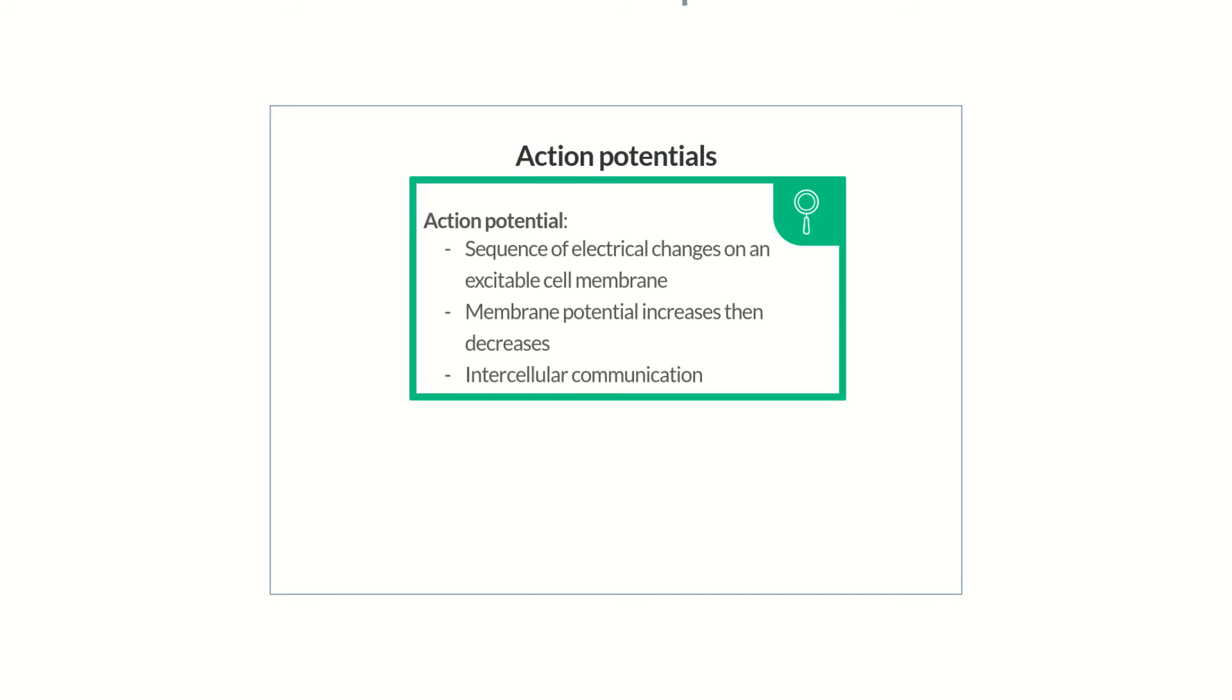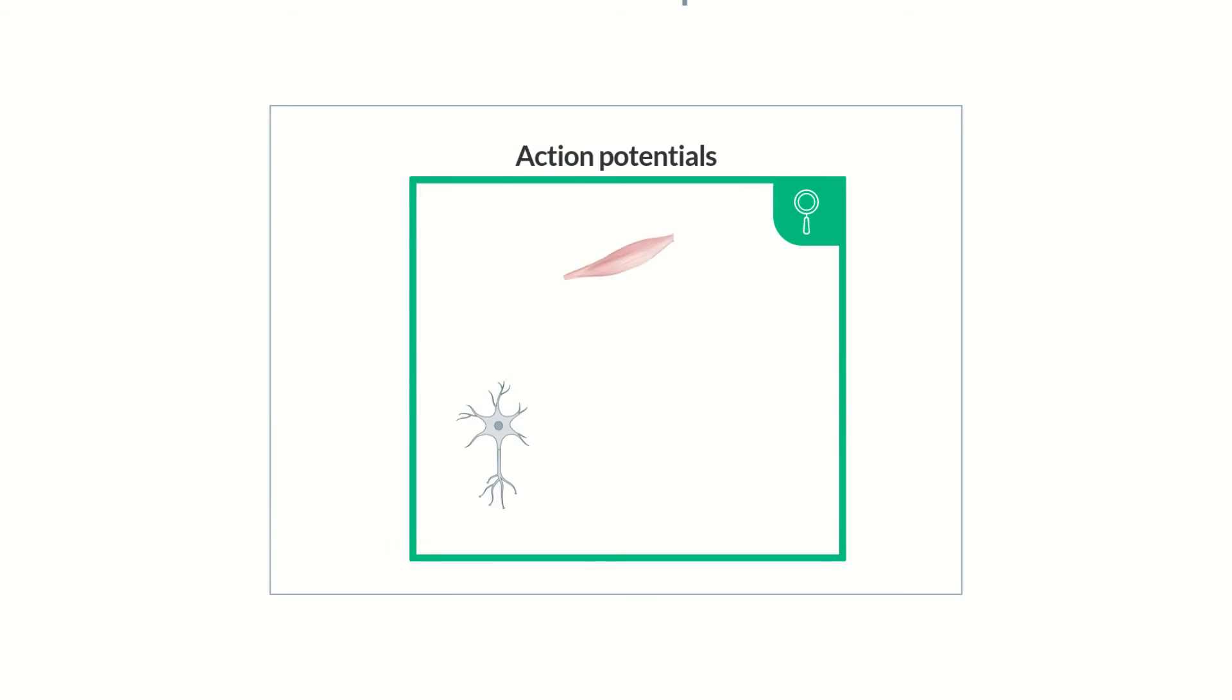Action potentials are generated in neurons, skeletal muscle cells, and cardiac muscle cells, also known as cardiomyocytes. Their generation is based on a common physiological principle, which we'll discuss in the first episode in this Chalk Talk series. The next three episodes compare action potentials in different cell types.